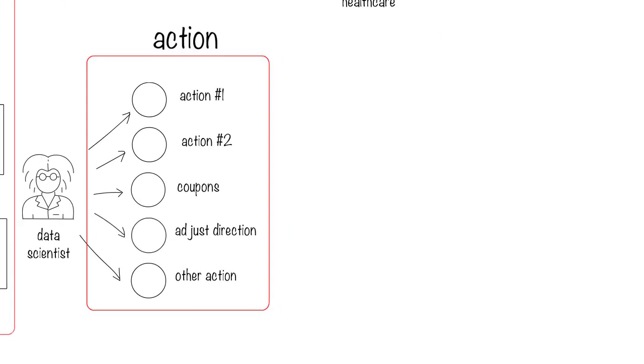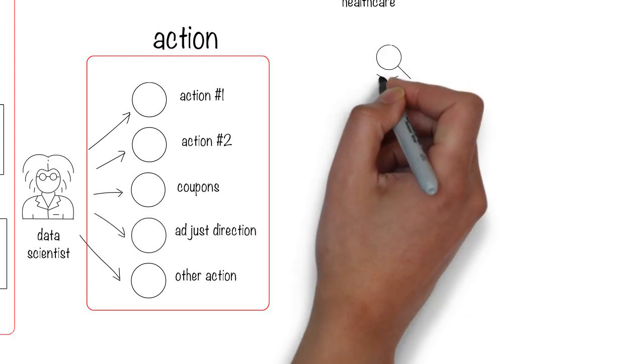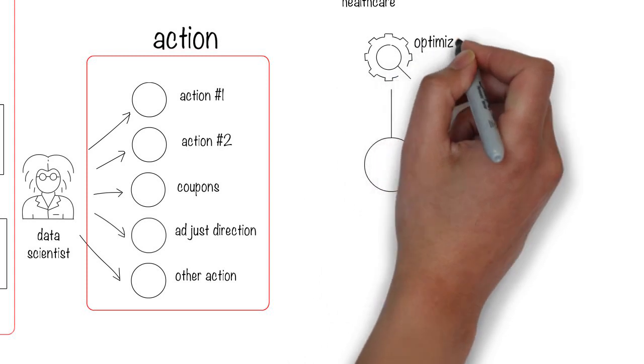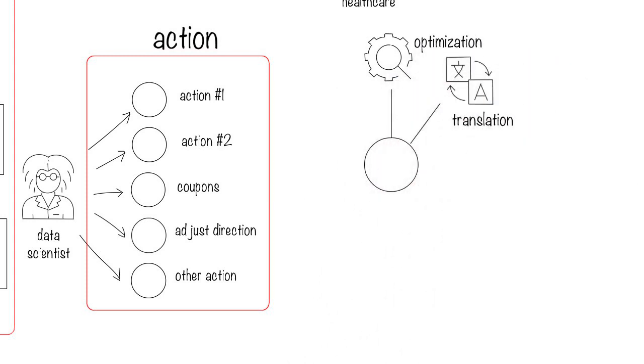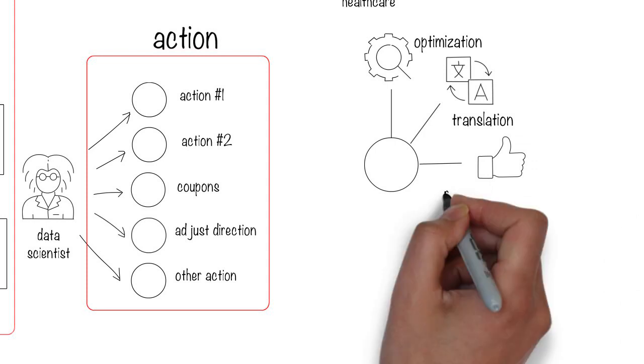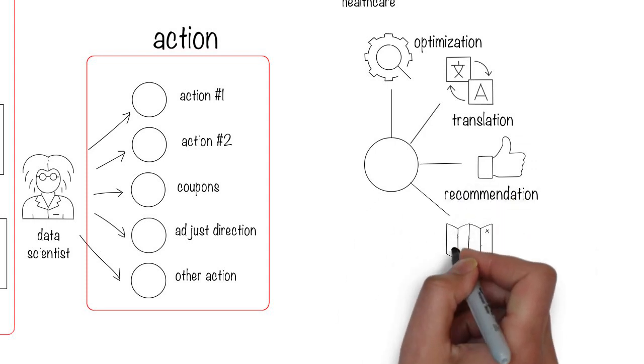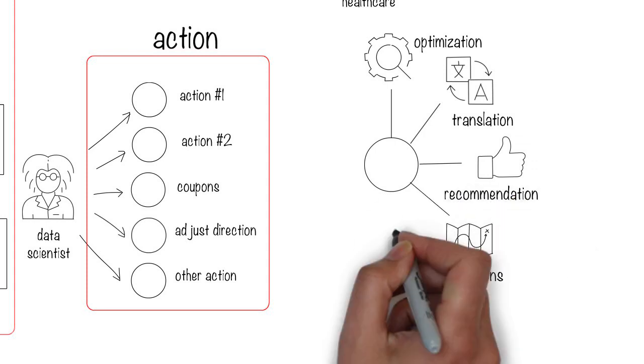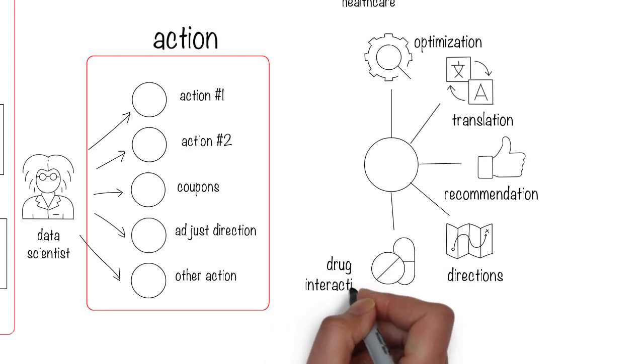Okay, based on this simple notion, you might be able to see how you can apply AI to the following problems: process optimization, language translation, product recommendations, giving travel directions, identifying drug interactions, and so on.